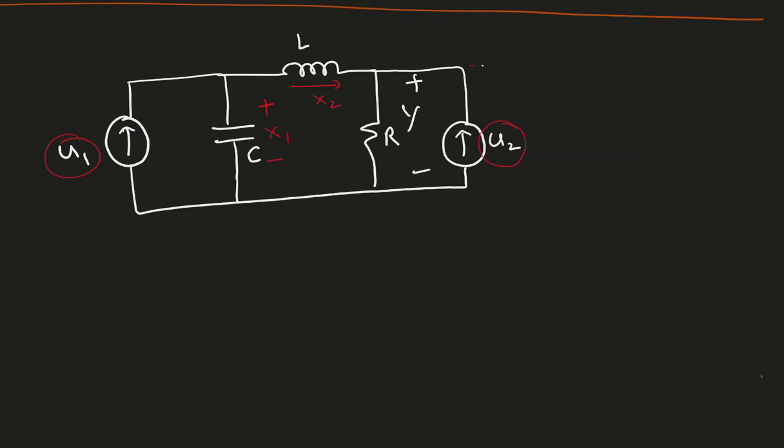If I have another inductor here, say for example another inductor, this is going to be X3, which is current passing through that inductor, but I am not choosing that. Since there are two state variables, we will end up with a two by two matrix.